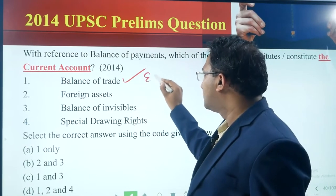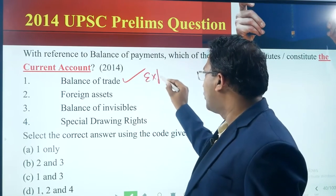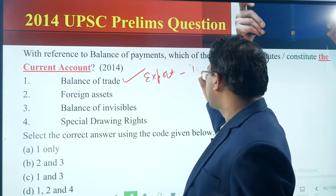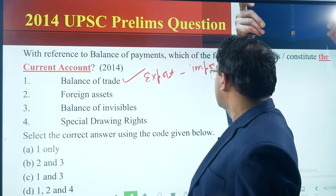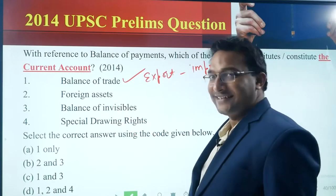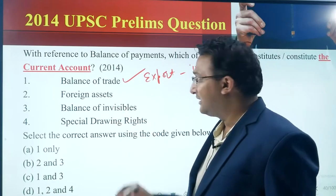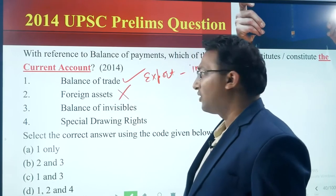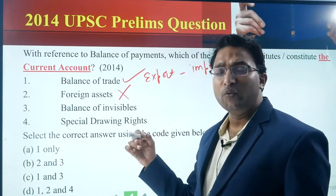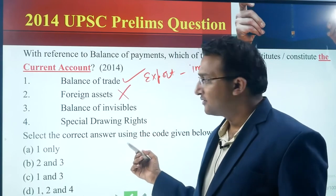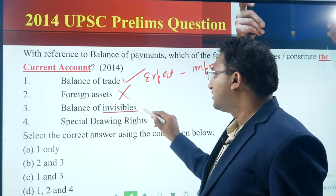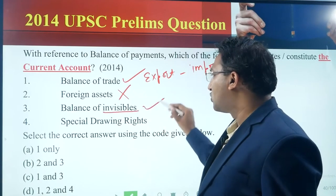Balance of trade is equal to the value of exports minus the value of imports. Two: foreign assets — this is not part of the current account; this is part of the reserves. I hope you remember foreign currency assets. Balance of invisibles — this is part of the current account only.